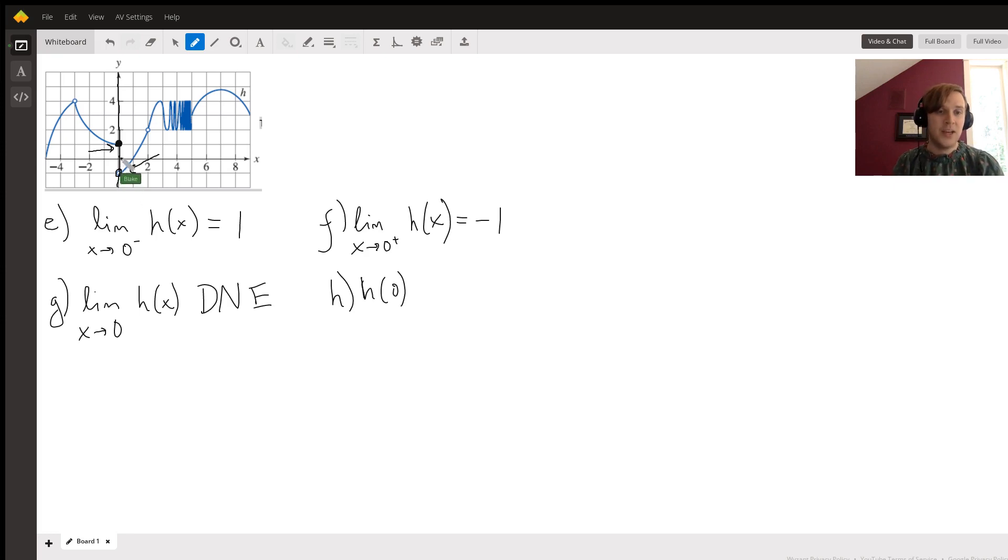So because the closed dot is up here, that means that when we put in zero for our function, we get a Y value of one. So H(0) is equal to one.